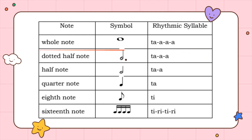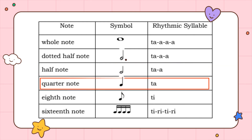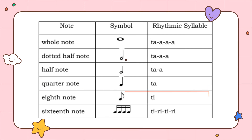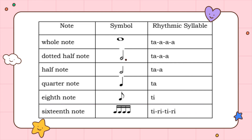The half note's rhythmic syllable is TAA. The quarter note has a rhythmic syllable of TA. An eighth note has a rhythmic syllable of TI. A sixteenth note has a rhythmic syllable of TIRI-TIRI.